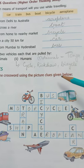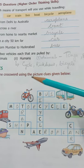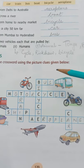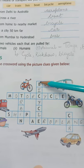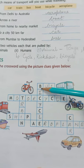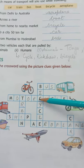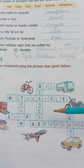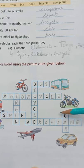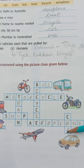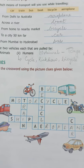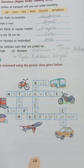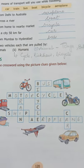Activities: solve the crossword using the picture clues given below. You have to complete it in your book. The answers include: bus, bicycle, motorcycle, train, ship, airplane, car. That's all for today, thank you.